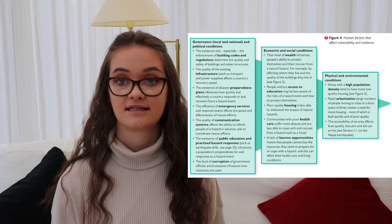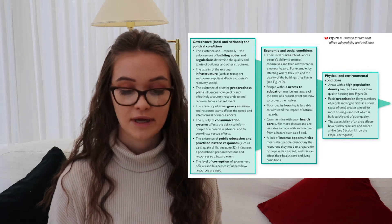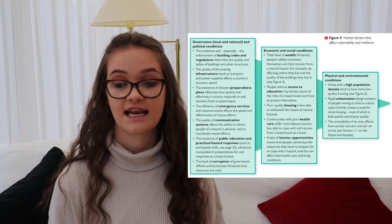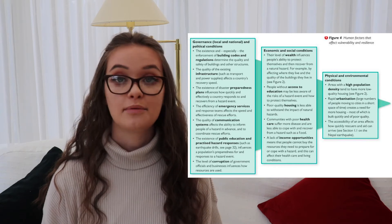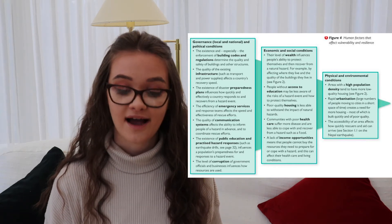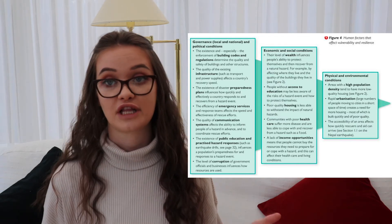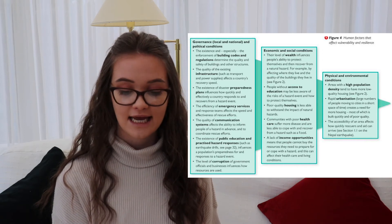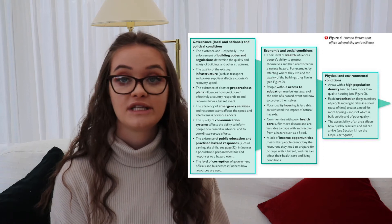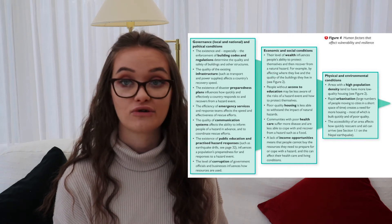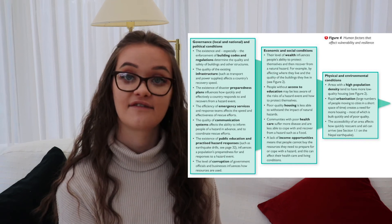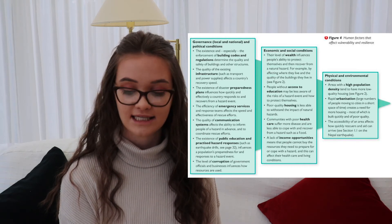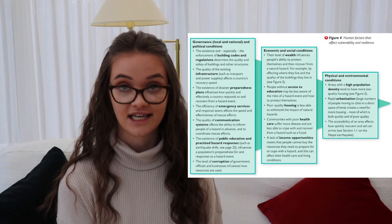Another factor involves economic and social conditions. The level of wealth influences people's ability to protect themselves and recover from a natural hazard — this affects the buildings they live in and how well they've been built. People without access to education may be less aware of hazard risks and how to protect themselves. Poor quality housing is less able to withstand natural hazards. Communities with poor health care suffer from disease and are less able to cope and recover. A lack of income opportunities means people cannot buy the resources needed to prepare or cope with a hazard.